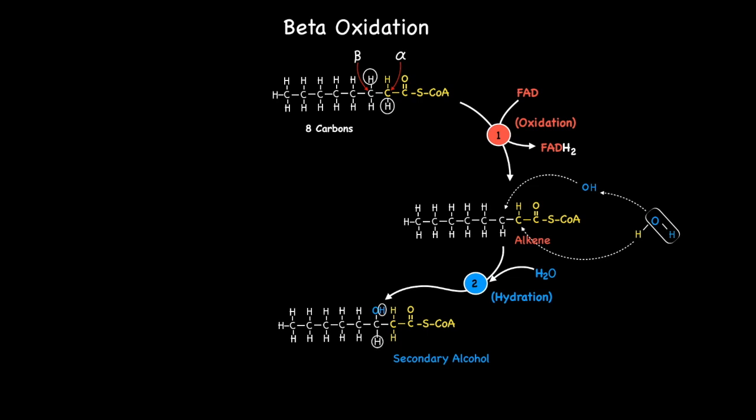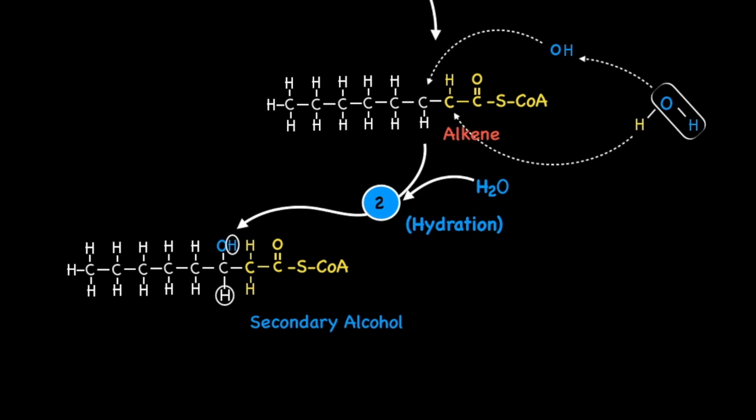This lays the foundation for the next step which involves the removal of hydrogen from the OH group in addition to a second hydrogen atom attached below the beta carbon. The removal of these hydrogens results in the oxidation of the secondary alcohol to give a ketone.